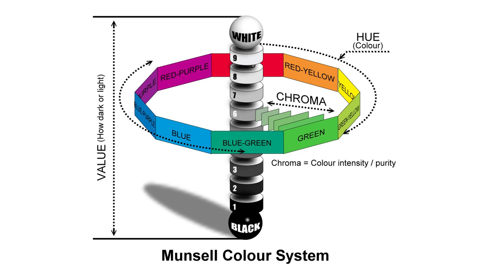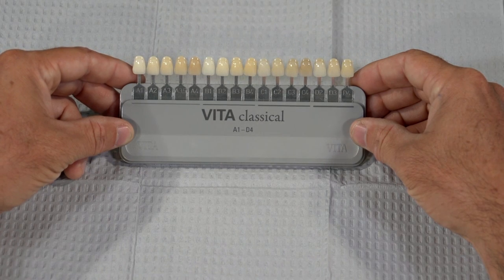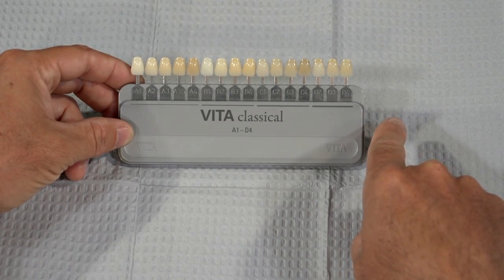What are shades made up of and why are they so important? It should be as simple as matching a tab to a tooth and writing it on the lab slip, but it really isn't. We aren't simply trying to communicate a single hue or color. We are also attempting to distinguish the shade's chroma — the level of saturation in that hue — as well as the shade's value, the level of white or dark overall. Let's look at the Vita Classical Shade Guide. It's one of the most popular shade guides used in dentistry, but it doesn't communicate all three of these ideal parameters, specifically the shade's value.